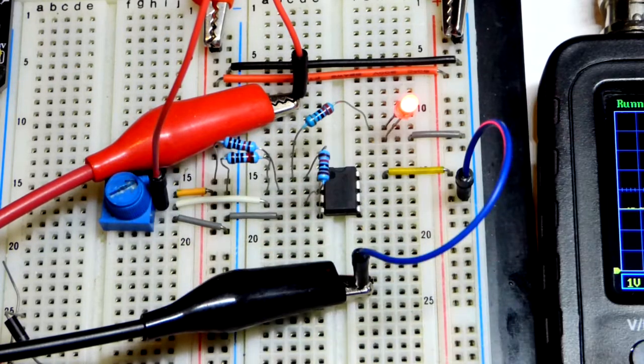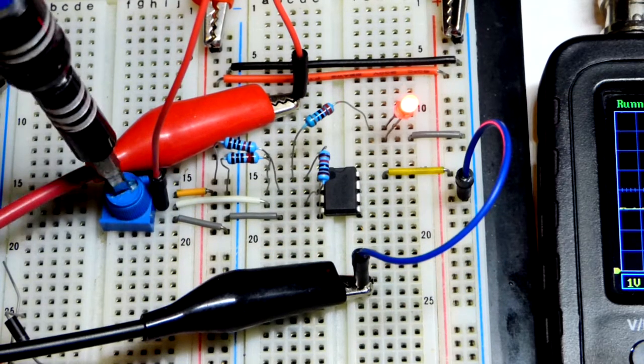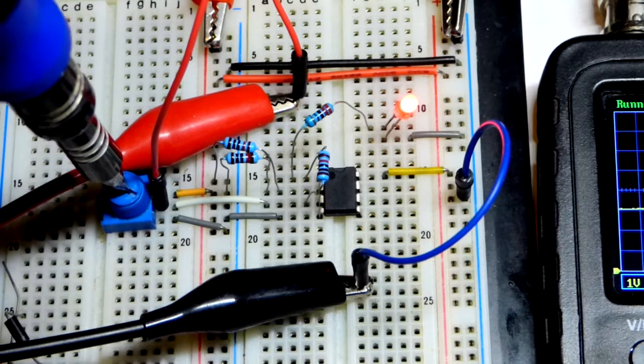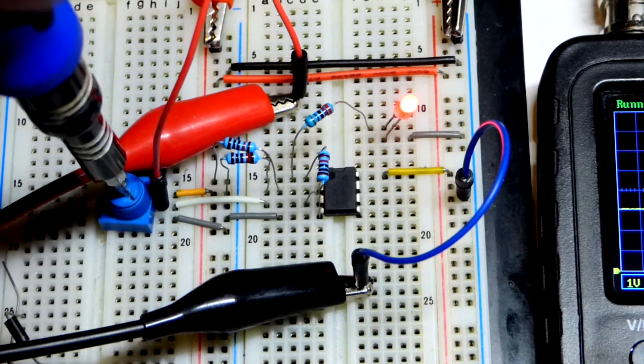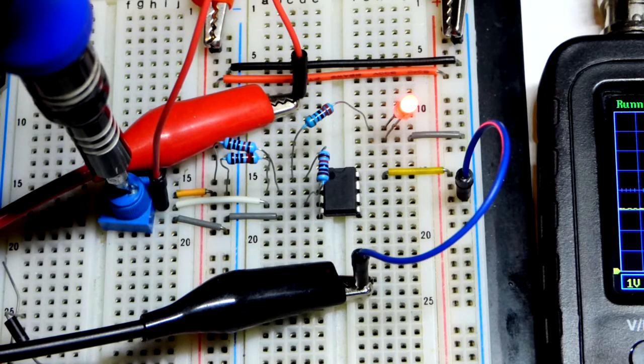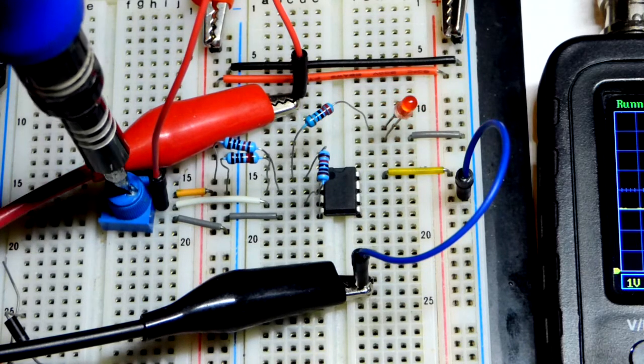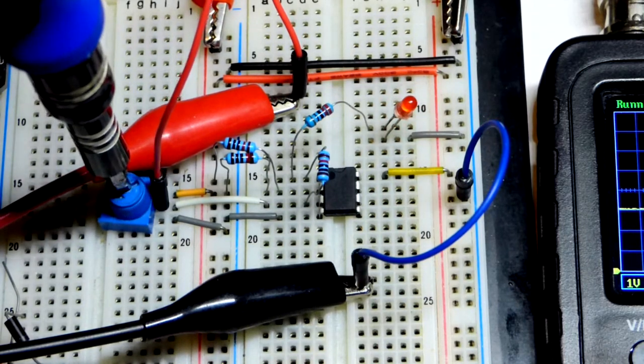So I got the trim pot. It's mostly set to the positive supply, and I could turn it around so it points to the rails better. But that's as positive as it can go. Somewhere about halfway, you're going to see the LED turn off right there.